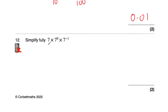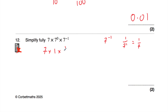Question: simplify fully 7 times 7 to the power of 0 times 7 to the power of negative 1. 7 to the power of 0 is 1 (anything to the power of 0 equals 1). 7 to the power of negative 1 is 1 over 7, the reciprocal. So we have 7 times 1 times 1 seventh. That's 7 times 1 seventh = 7 sevenths = 1.